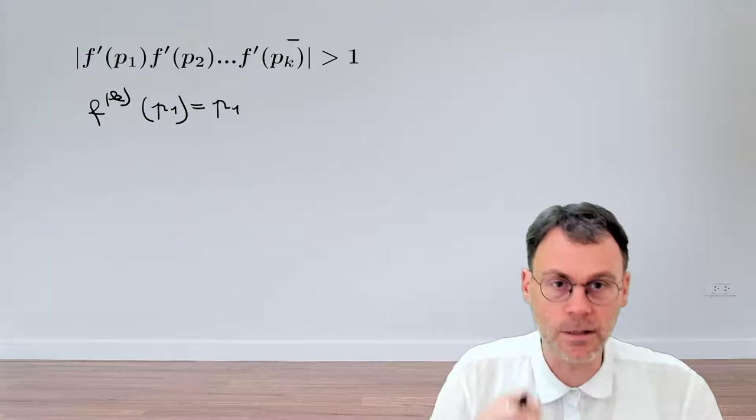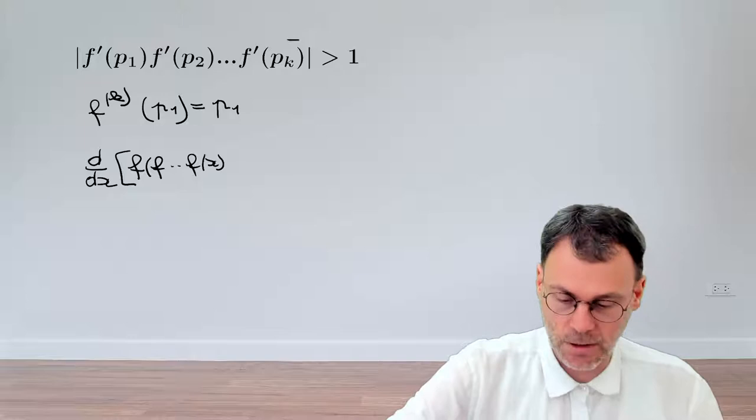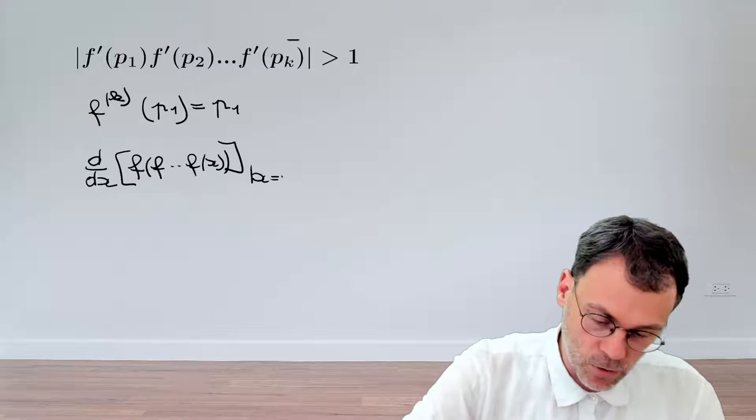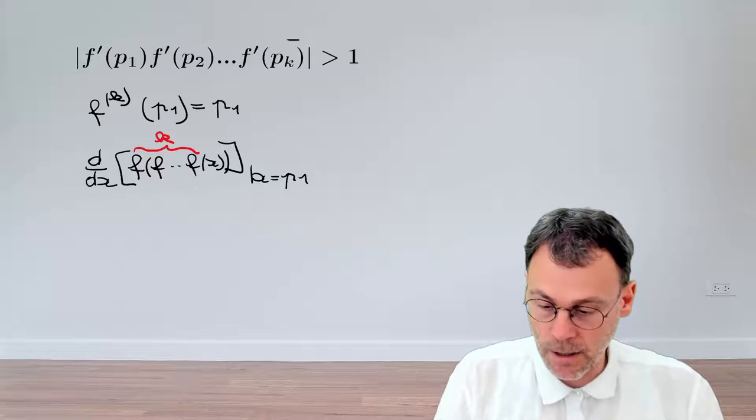So let's try and tackle this goal. We need to look at the derivative d/dx of the map f applied k times. So I'm going to unfold that here, f of f of x, making sure my brackets match. And then we evaluate that at the point p1. And we need to apply this f here k times.